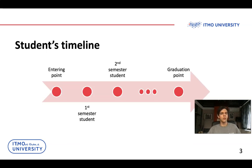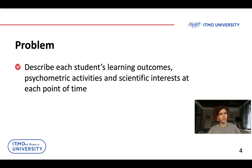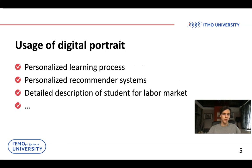Let's take a look at the timeline of a student. At each point in time, each student has their own views on their future career, properties, abilities, and learning outcomes. Our goal is to make each student as satisfied as possible at the graduation point. We can formalize this problem as needing to describe each student's learning outcomes, psychometric properties, and scientific interests at each point in time. If we can do this, we can make the studying process more personalized, paying attention to each student's abilities and other properties.